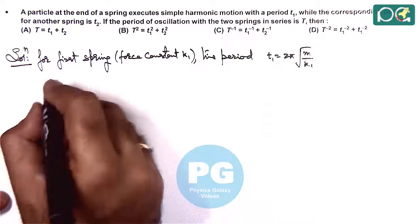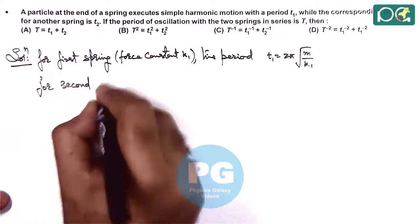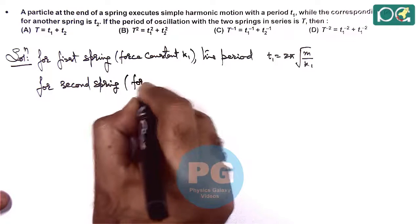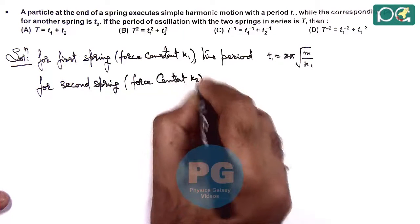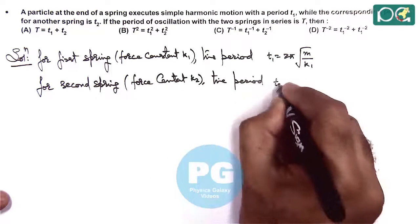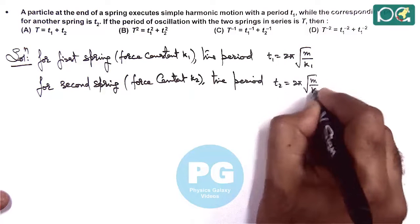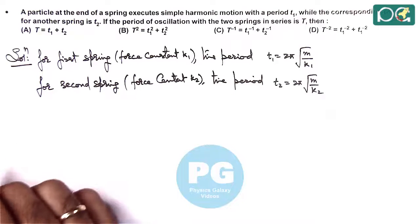Similarly, for the second spring with force constant k2, the time period is T2, which equals 2π√(M/k2).